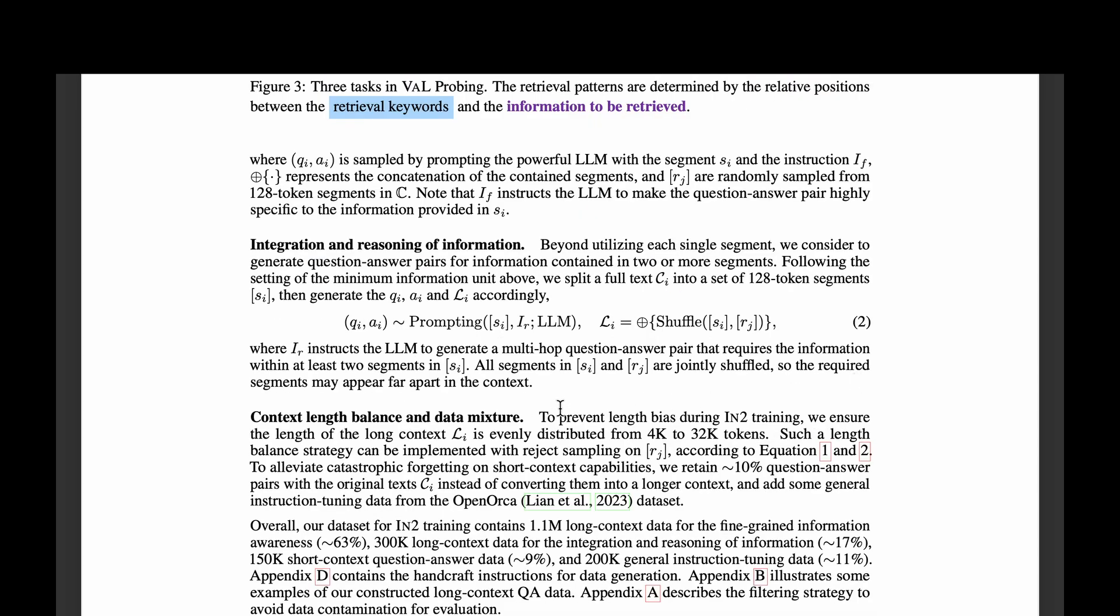One of the problems that could arise because of creating this synthetic data using this context length is that there can be a length bias during the IN2 training. So to overcome this, they ensure that the length of the long context LI is evenly distributed from 4K to 32K tokens such that the length balance strategy can be implemented to reject sampling on RI, the set of RJ samples that we create.